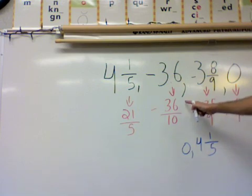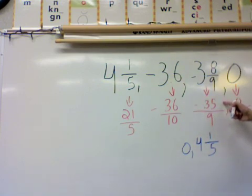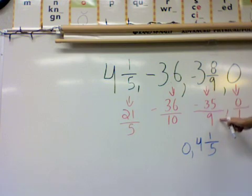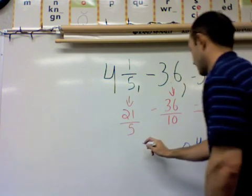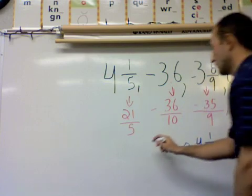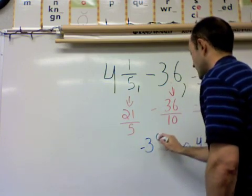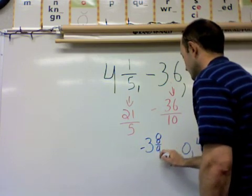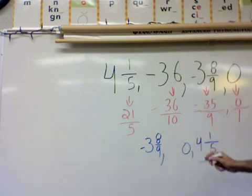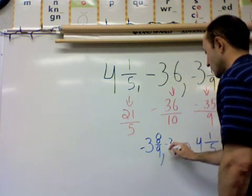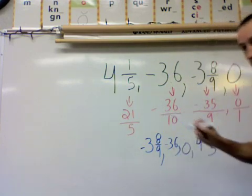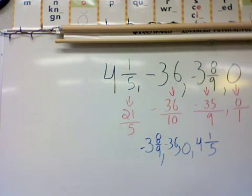Which narrows it down to these two negative improper fractions. Well if I have a look, 36 over 10, 35 over 9, which one is smaller? Well this one is smaller, so this will be the very first number. And it was negative 3 and 8 over 9, which leaves us with one more, negative 3.6.